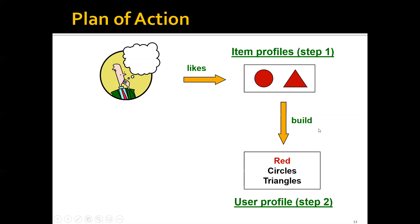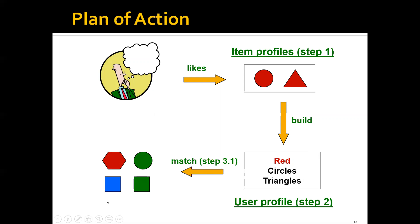In the next step, we build the user profile by combining the item profiles of the previous items. In this case, the user profile would be red, circles, and triangles. Since we have both the item profiles and the user profile, we can then find, from a pool of candidate items, the items that best match the user profile and recommend those items. In this case, we would probably recommend the red item to the user.